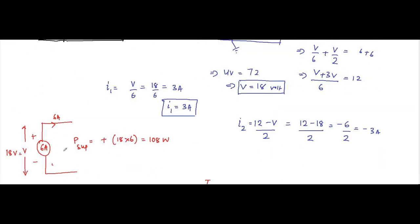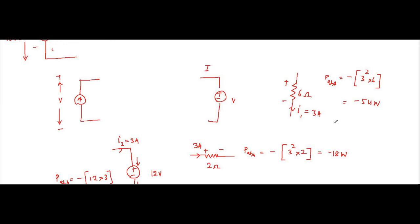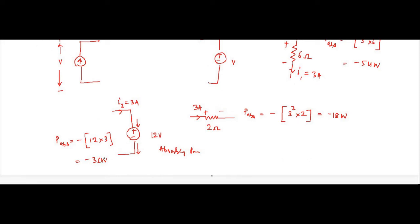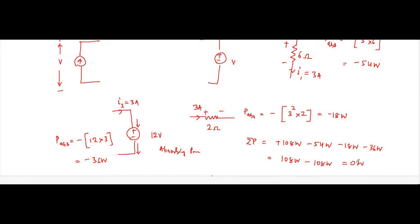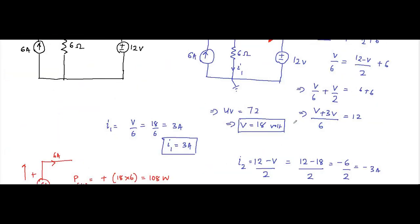Summing all the powers: the 6 ampere current source supplies +108 watts; the 6 ohm resistor absorbs minus 54 watts; the 2 ohm resistor absorbs minus 18 watts; and the voltage source absorbs minus 36 watts. Total = 108 − 54 − 18 − 36 = 0 watts. The total power in the circuit is 0, verifying Tellegen's theorem.